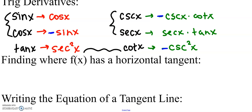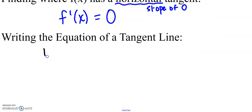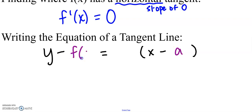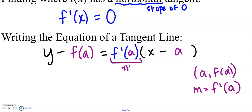If a problem asks you to find where f(x) has a horizontal tangent line, that's really asking where the derivative f prime equals 0, because a horizontal tangent line has a slope of 0. If you need to write the equation of a tangent line, use point-slope form at the point (a, f(a)), where the slope is the derivative evaluated at a — you need to substitute in a and get a numerical value.